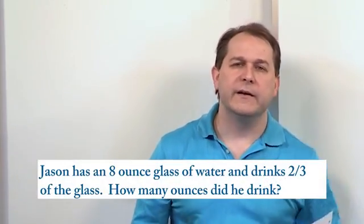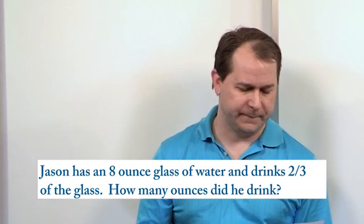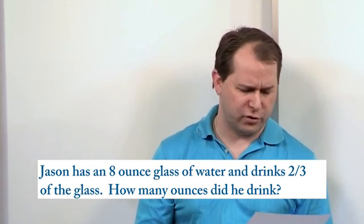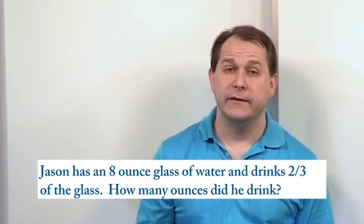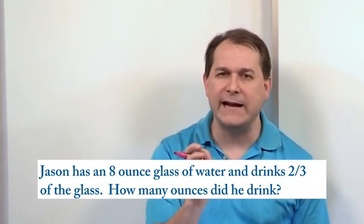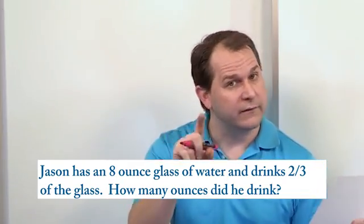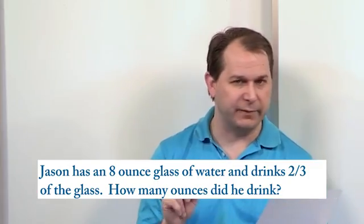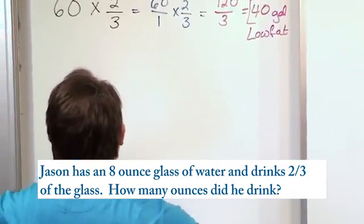All right? That's basically how that works. The second question says, Jason, that's me, has an eight-ounce glass of water, and I drink two-thirds of this glass. How many ounces did I drink? Right? So it's the same kind of thing. I have an eight-ounce glass of water, but I drink two-thirds of, the key word of, two-thirds of this glass. That means multiplication. How many ounces did I drink?